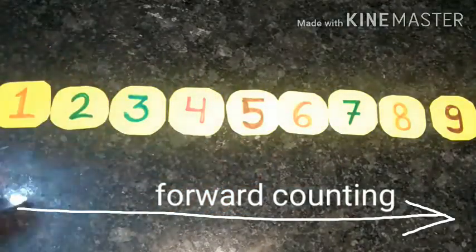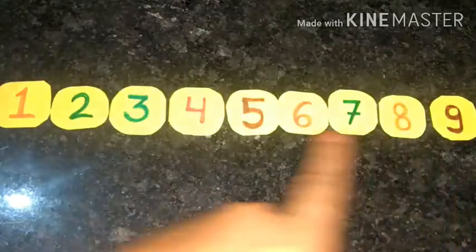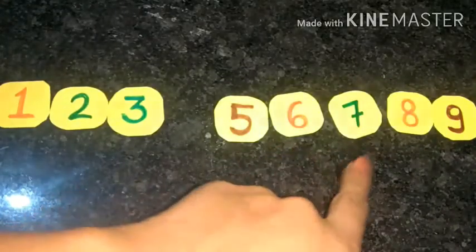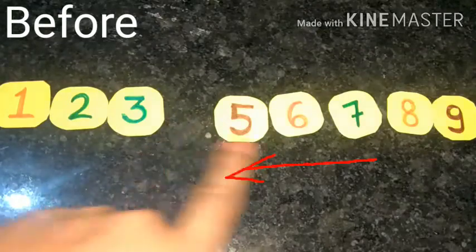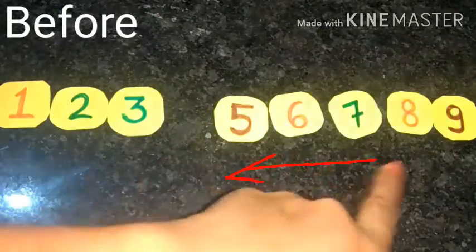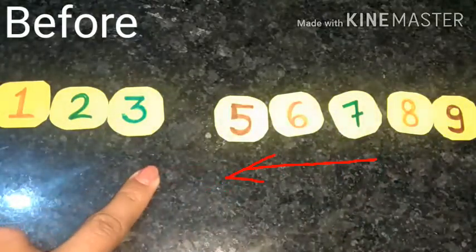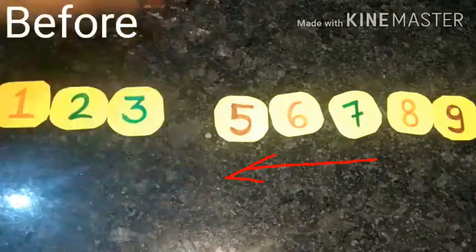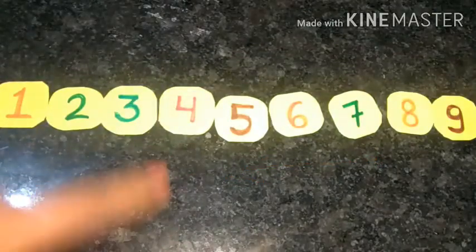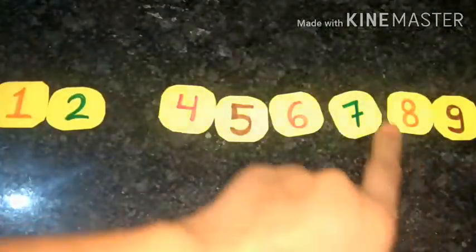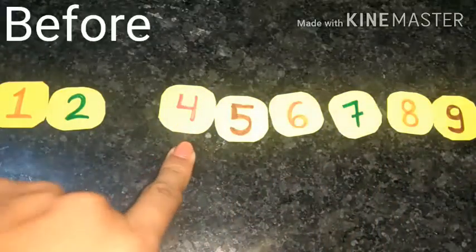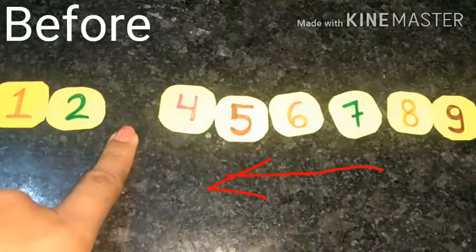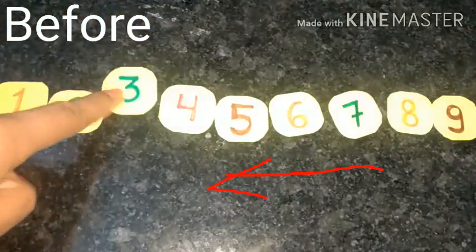And whenever the question asks what comes before, you will count from this side. For example, what comes before 5? Before means this side — we count backward: 9, 8, 7, 6, 5 — so 4 will come. What comes before 4? Count: 9, 8, 7, 6, 5, 4 — so 3 comes before 4.